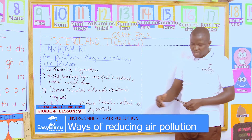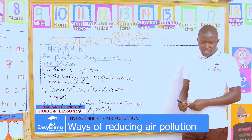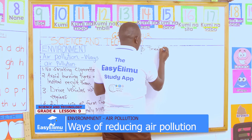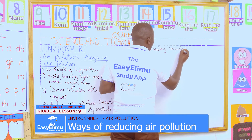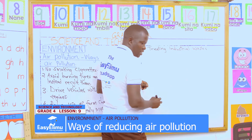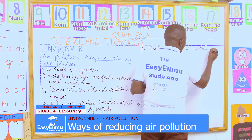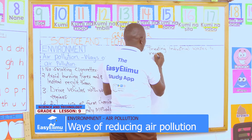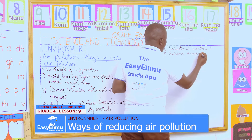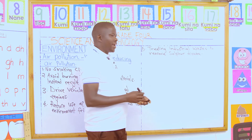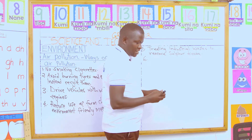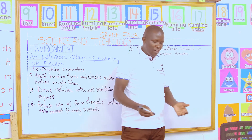Point number five: to reduce air pollution is treating industrial wastes — treating industrial wastes to remove sulfur dioxide. Remember, sulfur dioxide is responsible for acid rain, which will kill aquatic animals or corrode roofs.